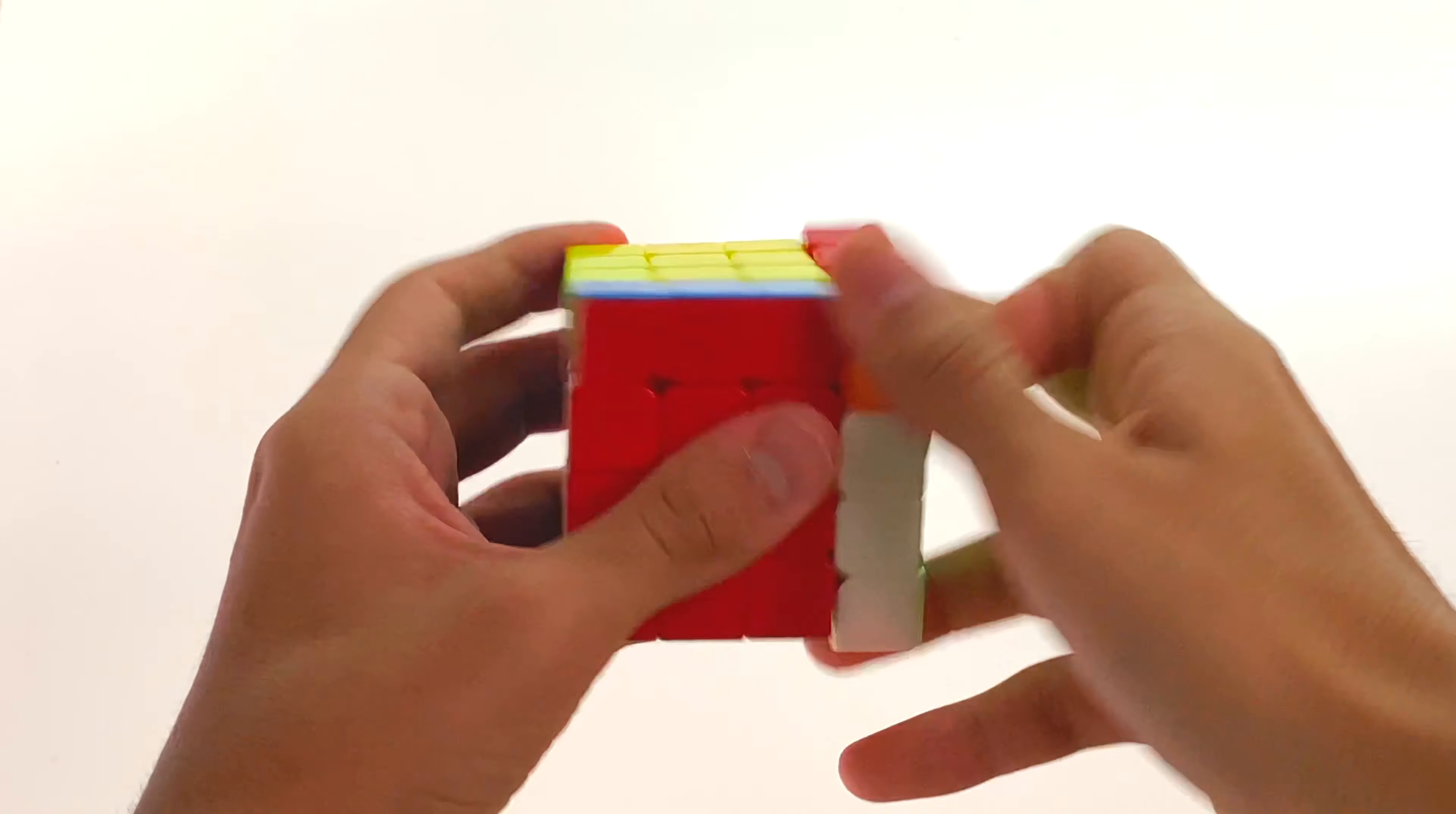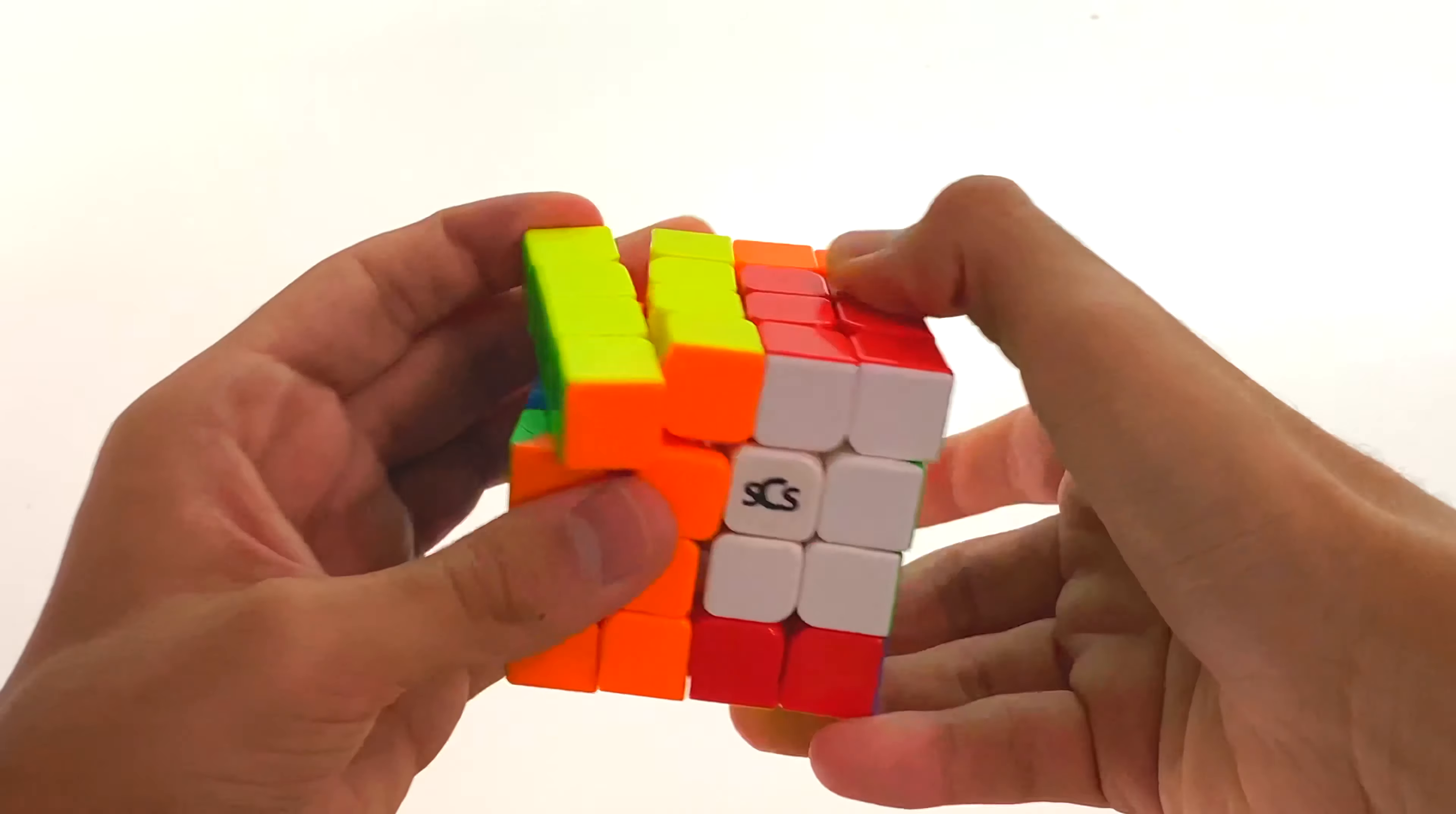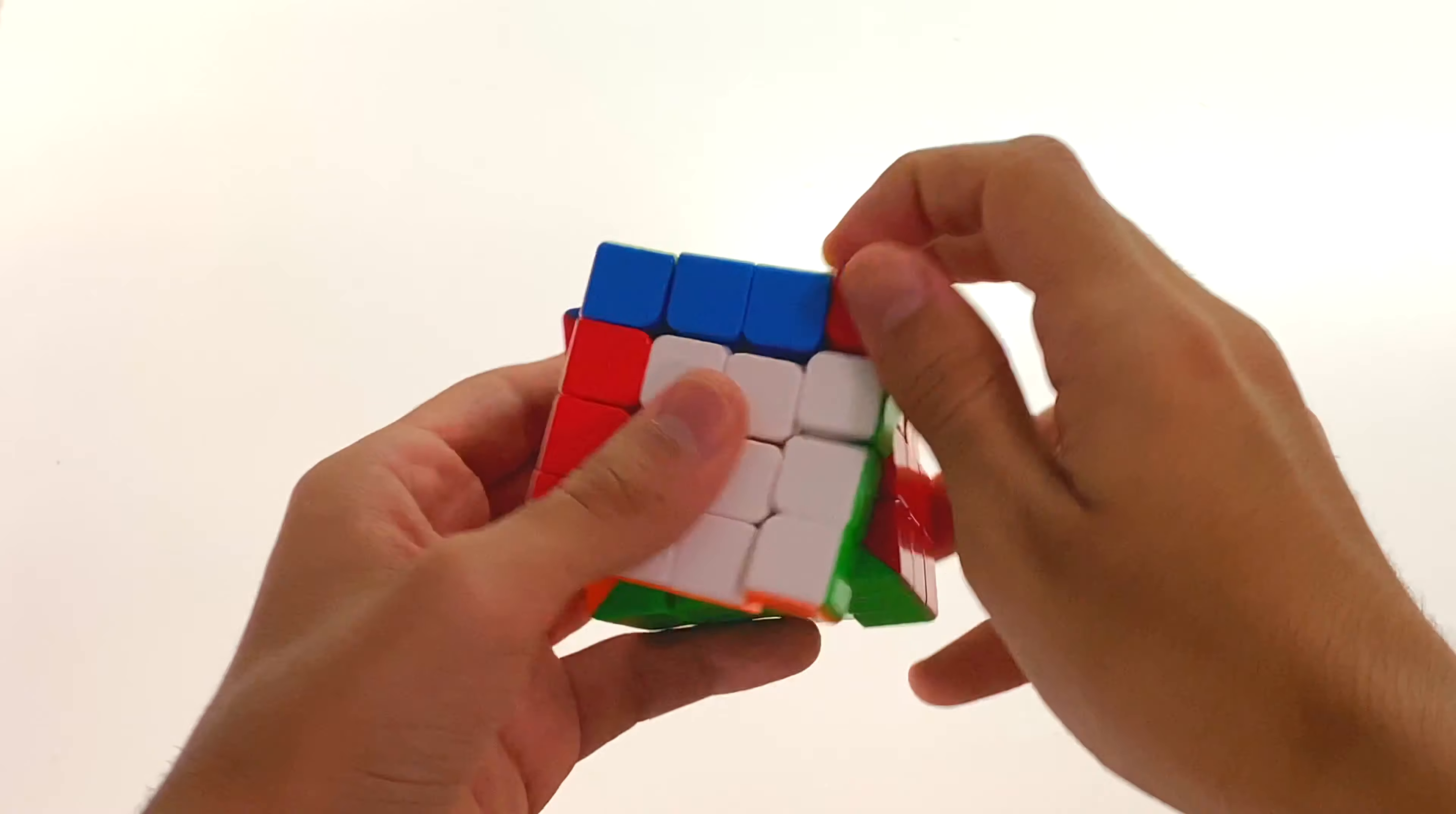For me, the GTS2's speed just didn't cut it but I really liked its stability and fluidity. The MGC's speed was decent but for some reason, I kept getting pops on it. The WRM has the good qualities of both cubes and it overall gives us the best of both worlds.